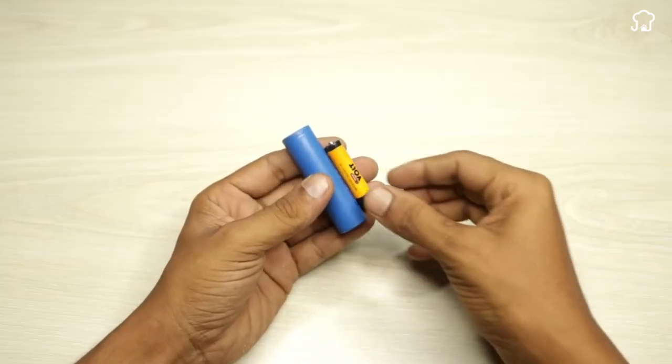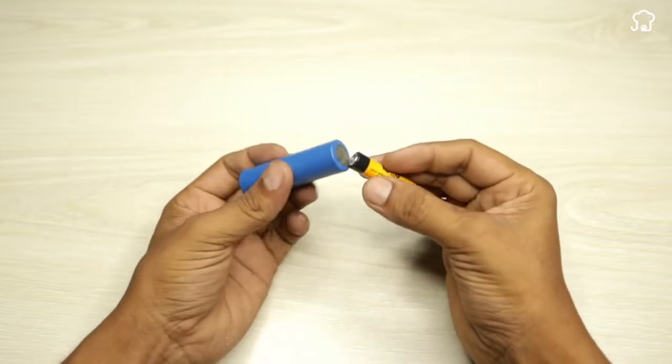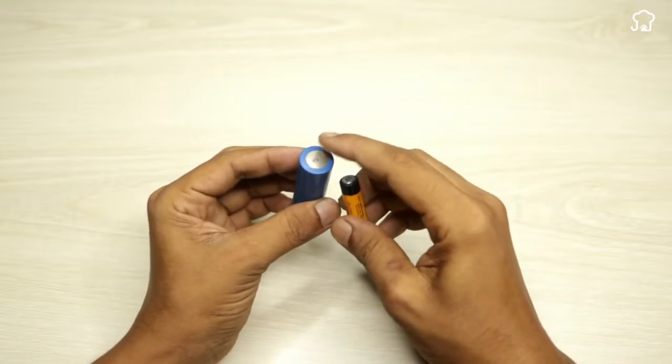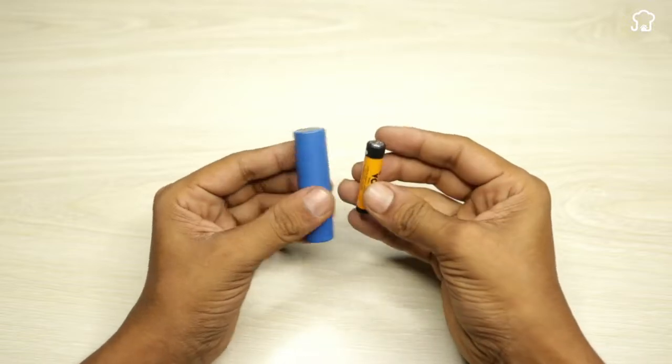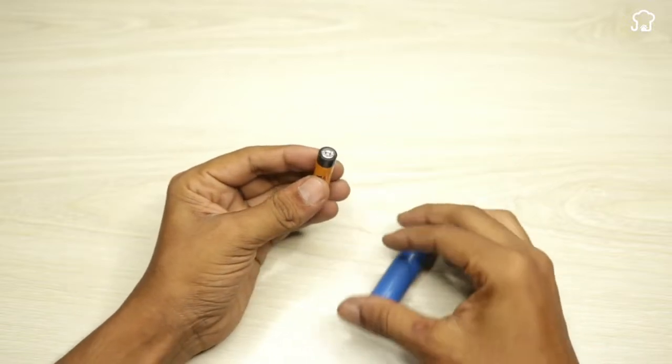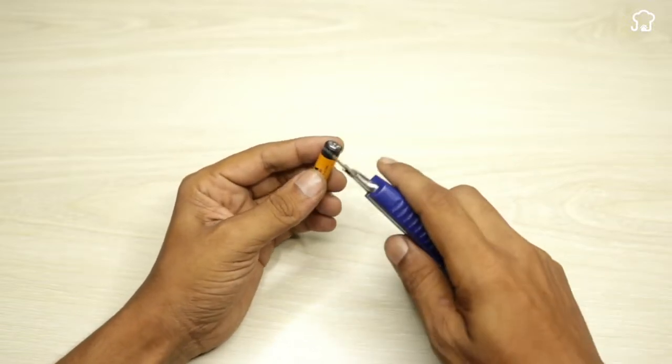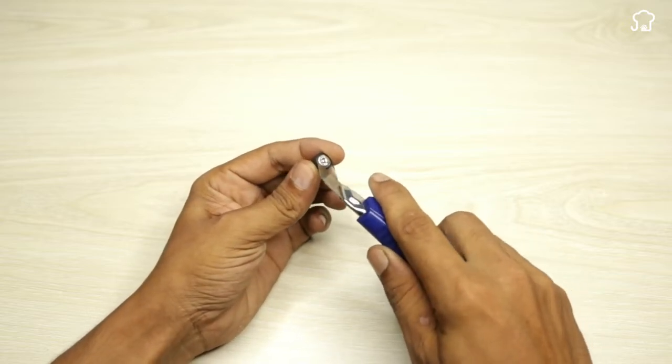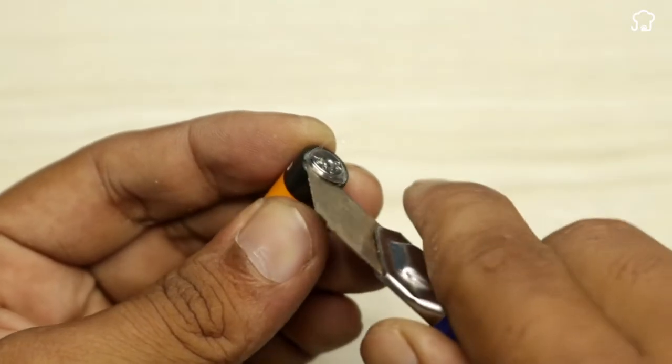Next, you need a triple-A battery. With the cutter, remove the aluminum cover from the battery pole. This small piece of aluminum will be key to the repair.